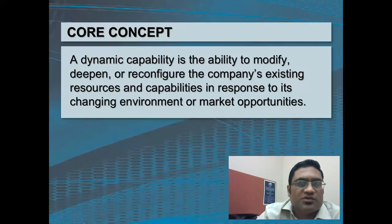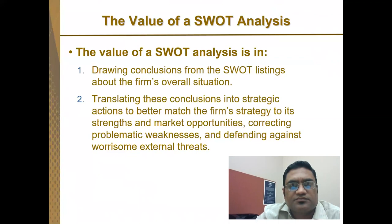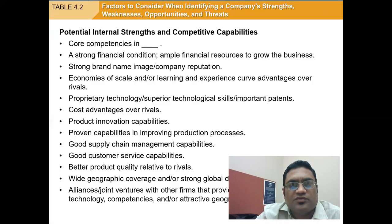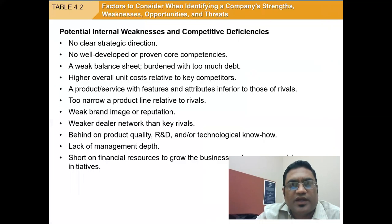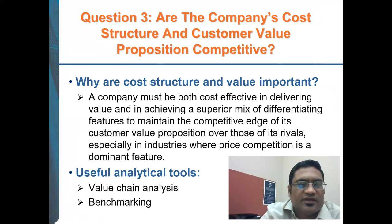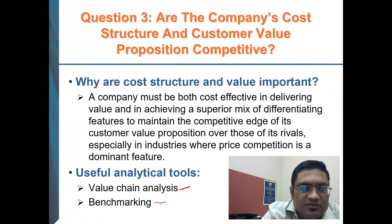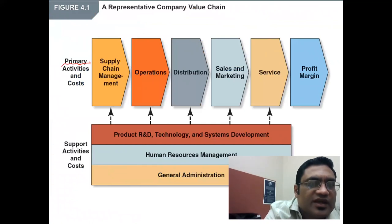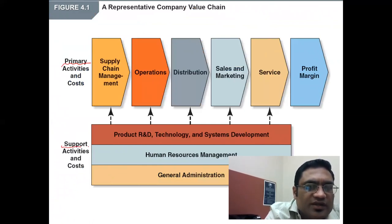We also talked about dynamic capabilities and SWOT analysis. One of the ways to find out if the company is competitive is through value chain analysis and benchmarking. The value chain is divided into primary activities and secondary — or support — activities.